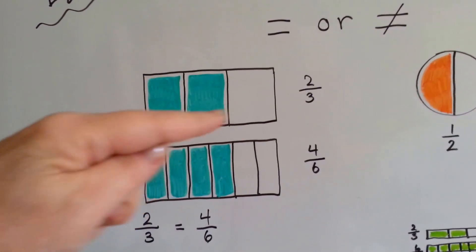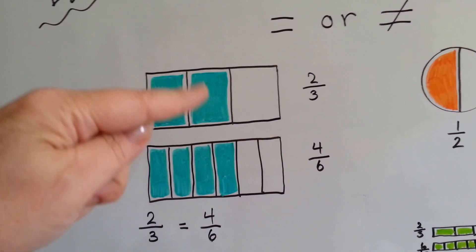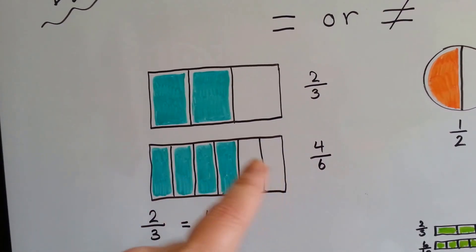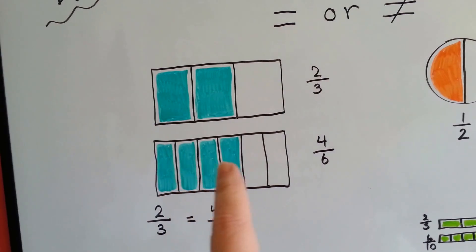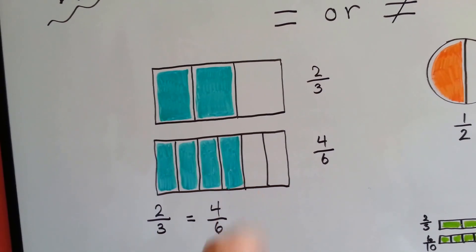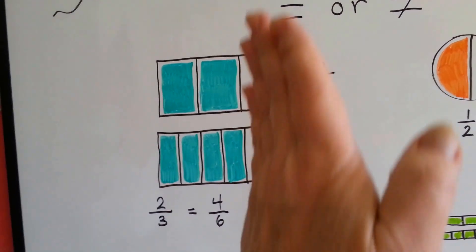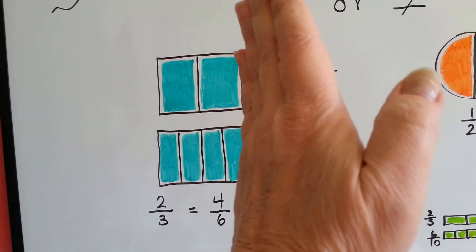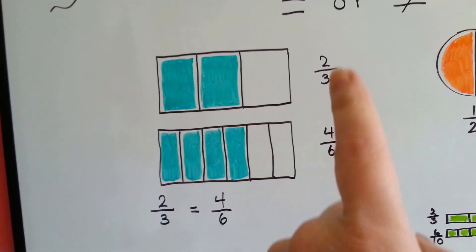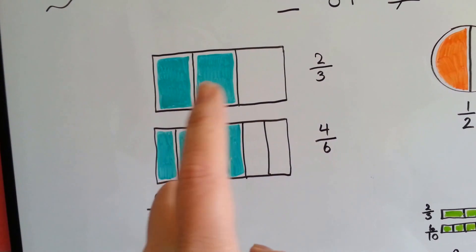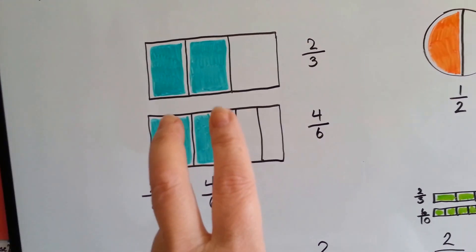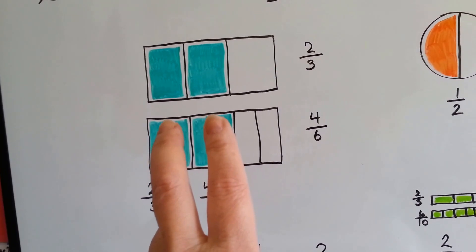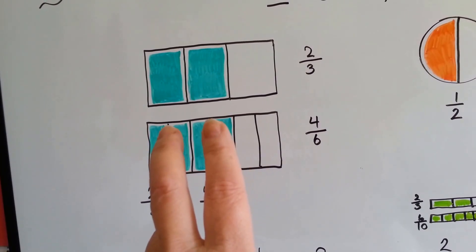This is split into three parts. Two of them are green. This one is the same size. And it's split into six parts, and four are green. And look, it's the same amount. So two thirds is the same as four sixths. All you have to do is take away these two lines right here, and they would be the same. See? It would be two thirds.